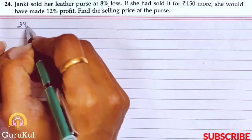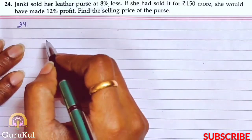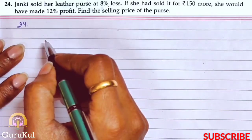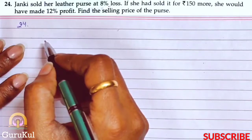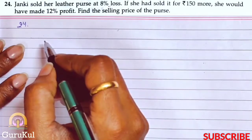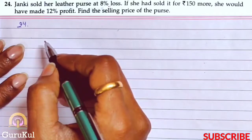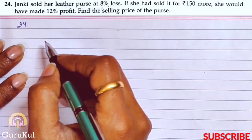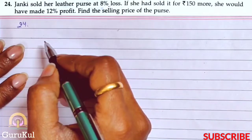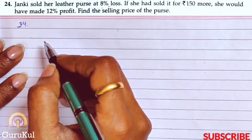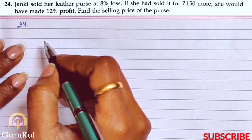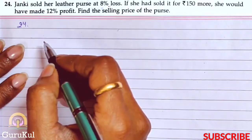Question number 24. Janaki sold her leather purse at 8% loss. If she had sold it for rupees 150 more, she would have made 12% profit. Find the selling price of the purse. This is similar to previous problems, but here we need to find selling price.